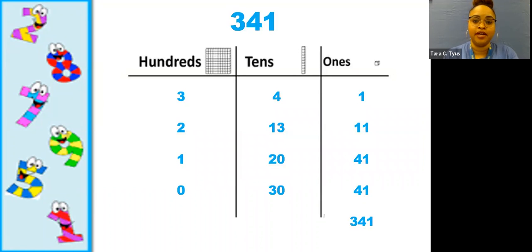Using that same number of 341, we will use the place value chart with again, our hundreds, tens, and ones to show the many different ways. So I'm not going to go through this whole chart, but as you can see, there are many different ways to represent that number of 341.